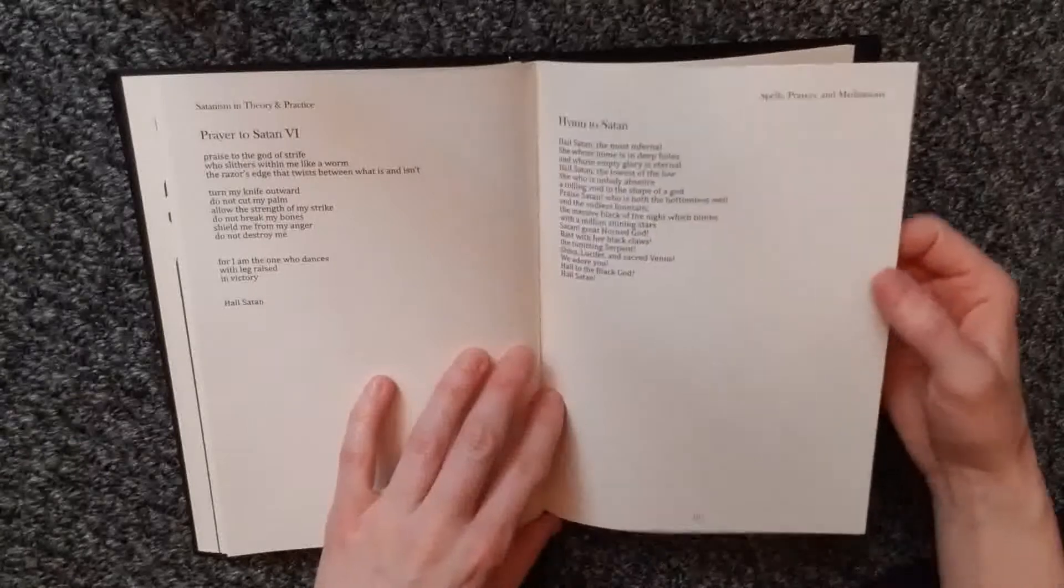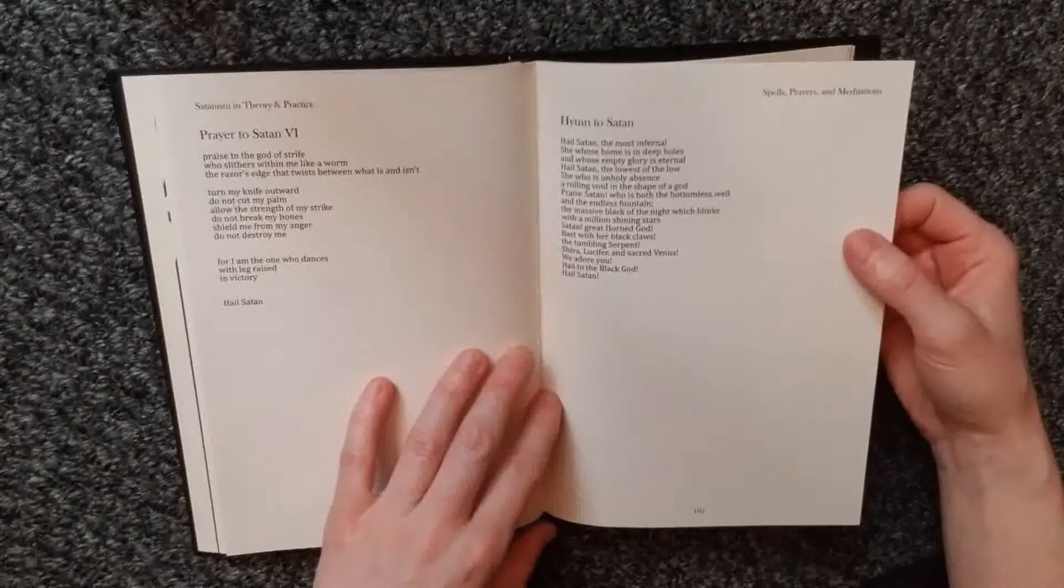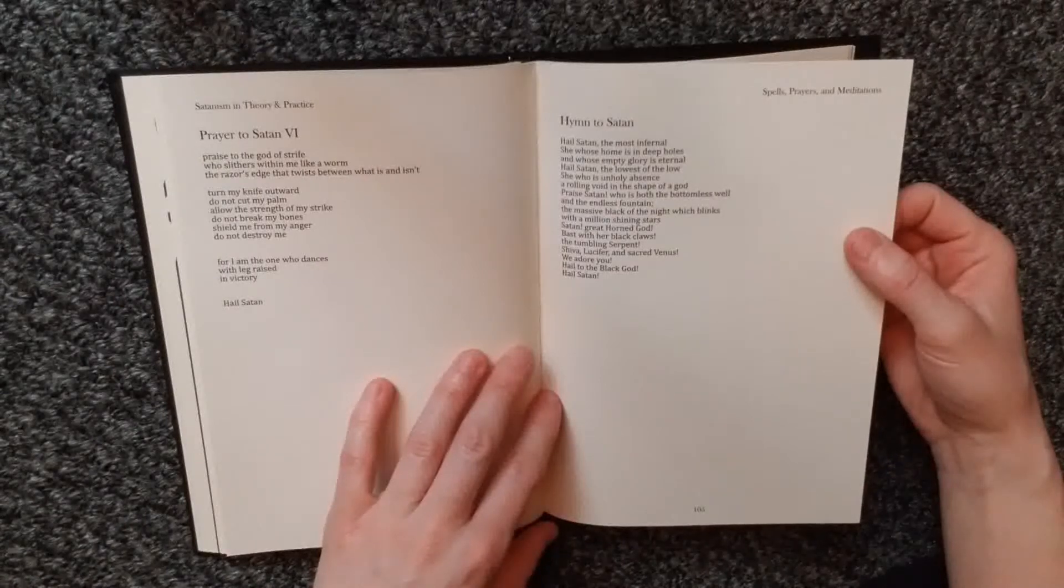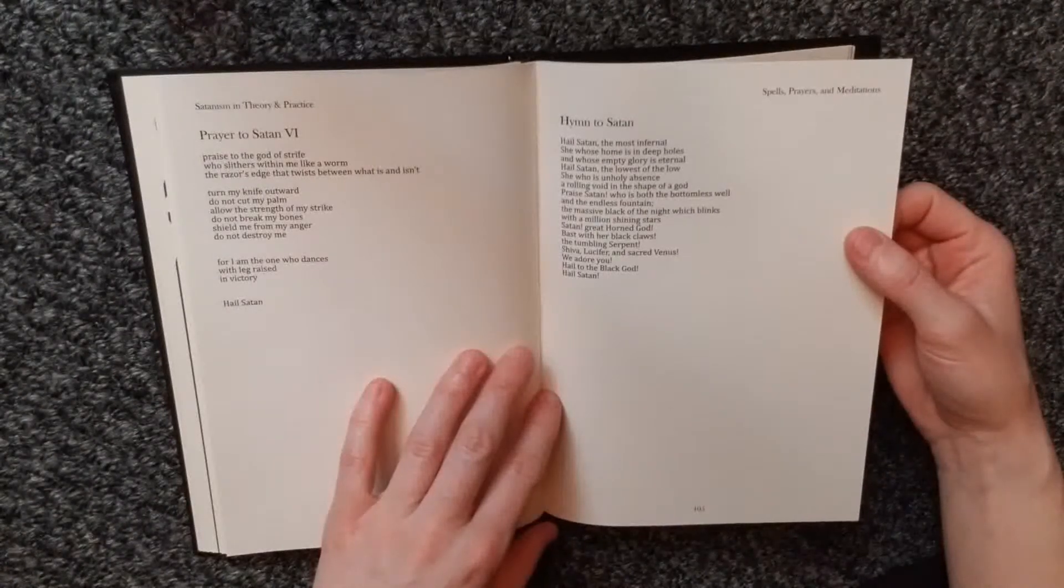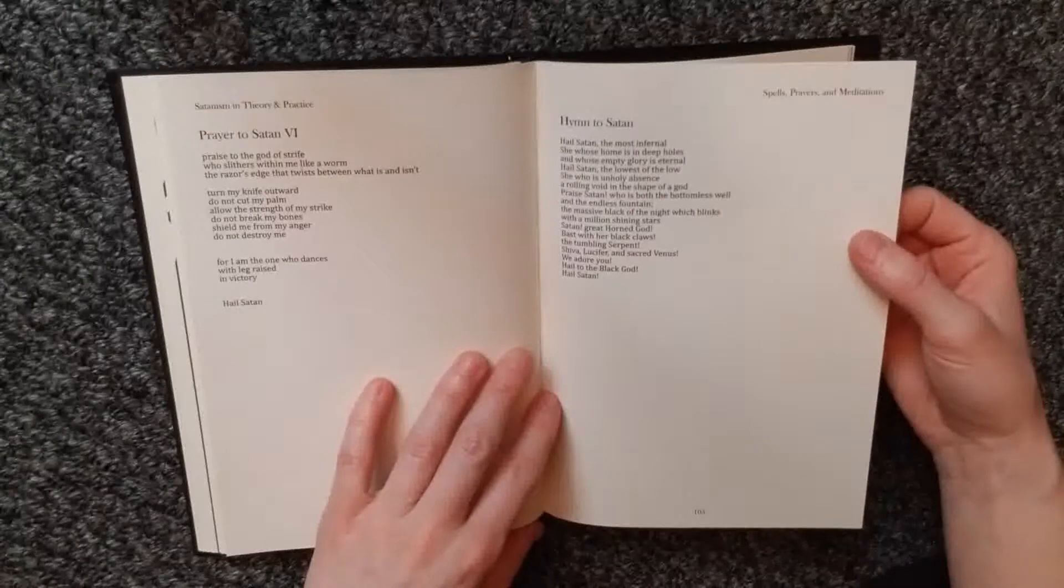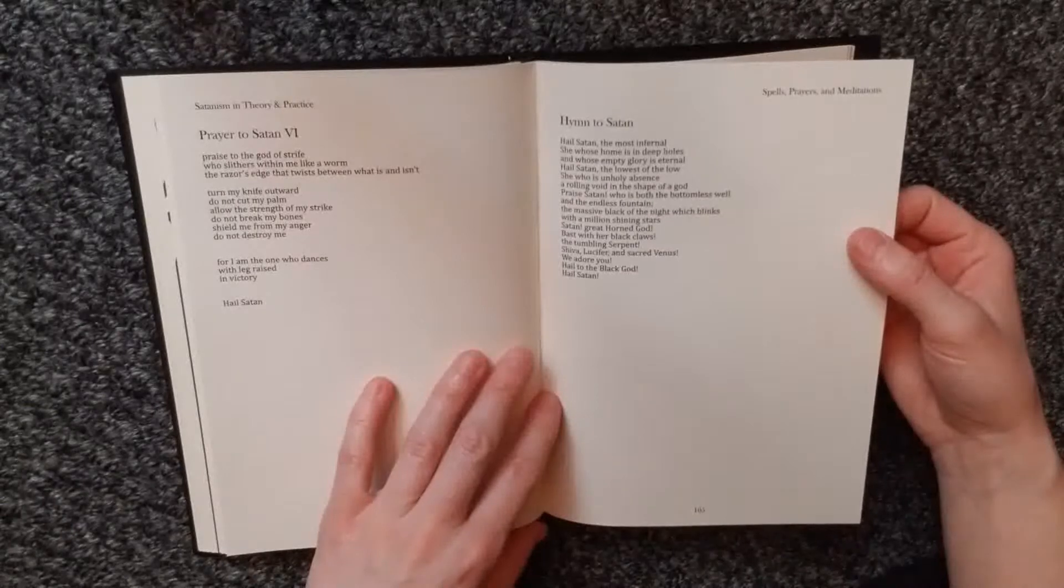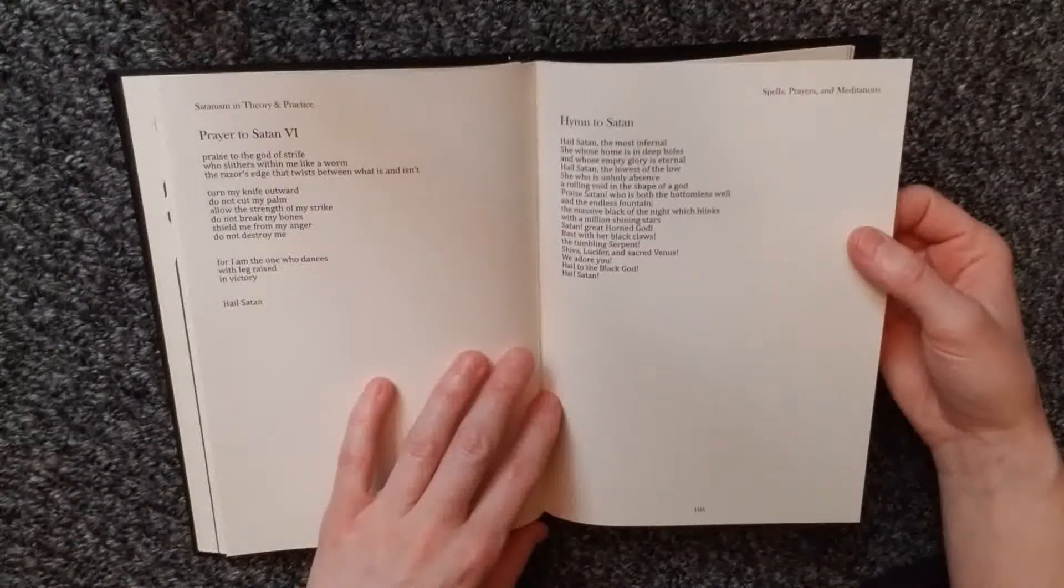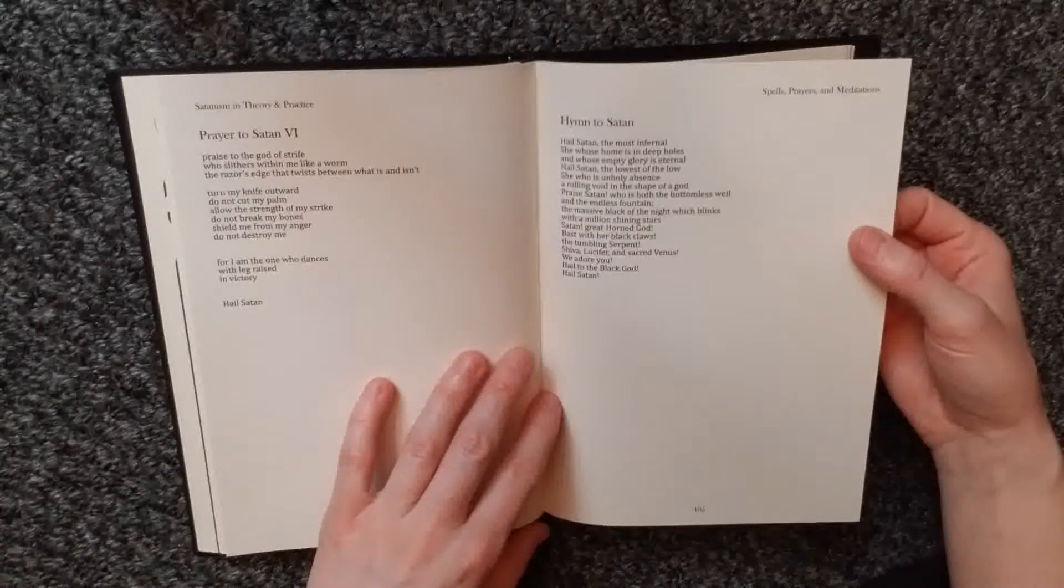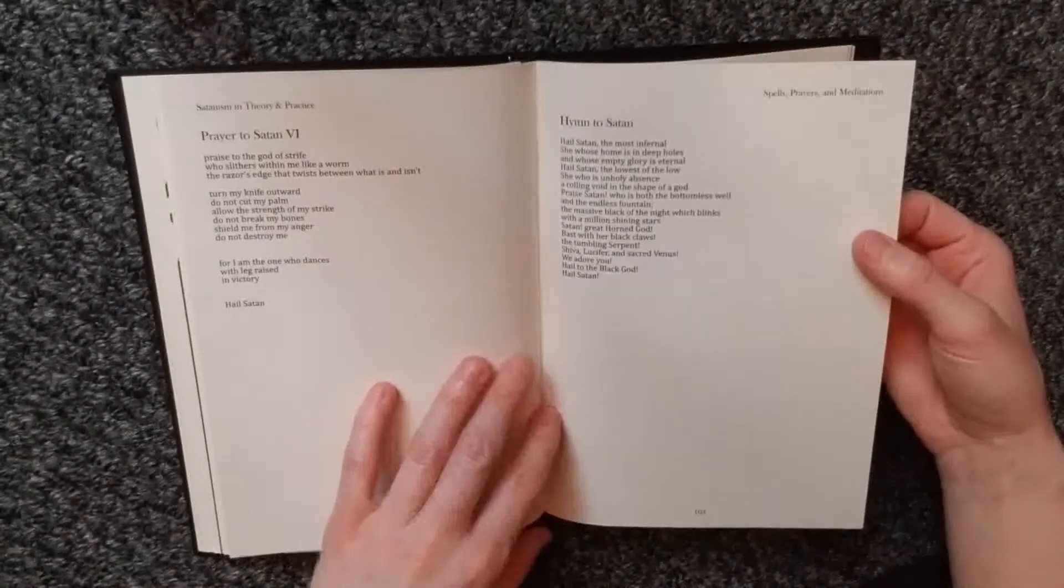Hymn to Satan. Hail Satan, the most infernal, she whose home is in deep hole and whose empty glory is eternal. Hail Satan, the lowest of the low, she who is unholy absence, a rolling void in the shape of a god. Praise Satan, who is both the bottomless well and the endless fountain, the massive black of the night which blinks with a million shining stars. Satan, great horned God, Bast with her black claws, the tumbling serpent, Shiva, Lucifer, and sacred Venus. We adore you. Hail to the black God. Hail Satan. That's awesome.